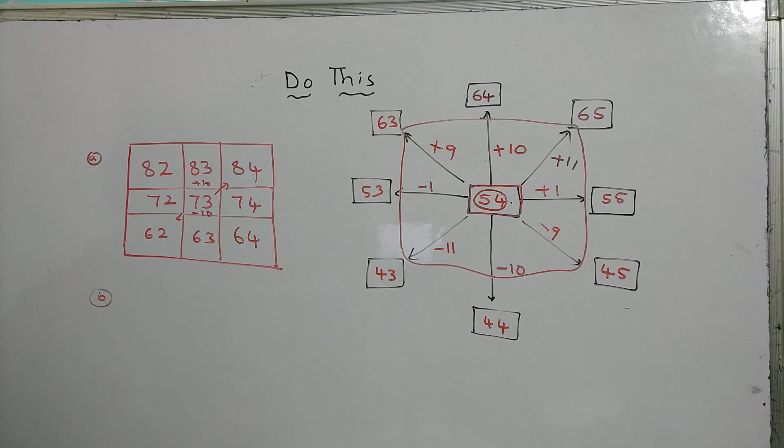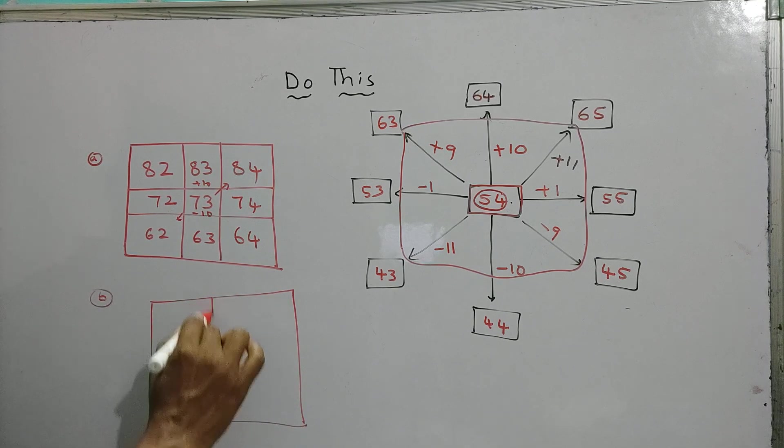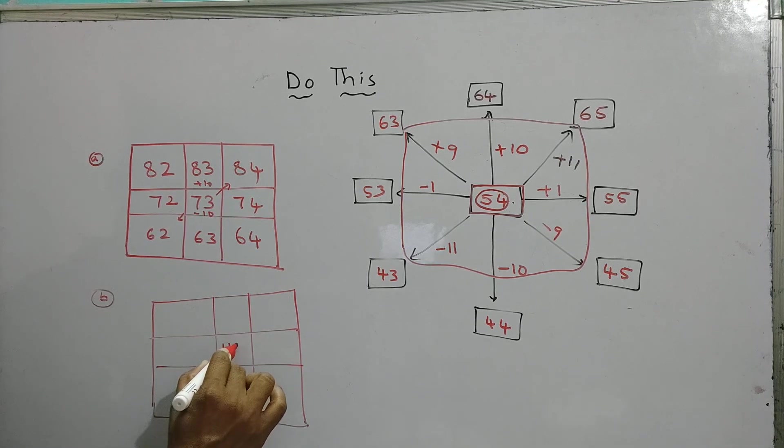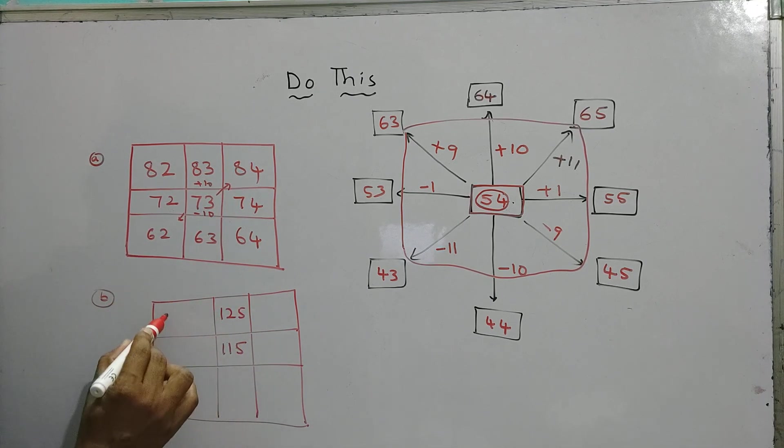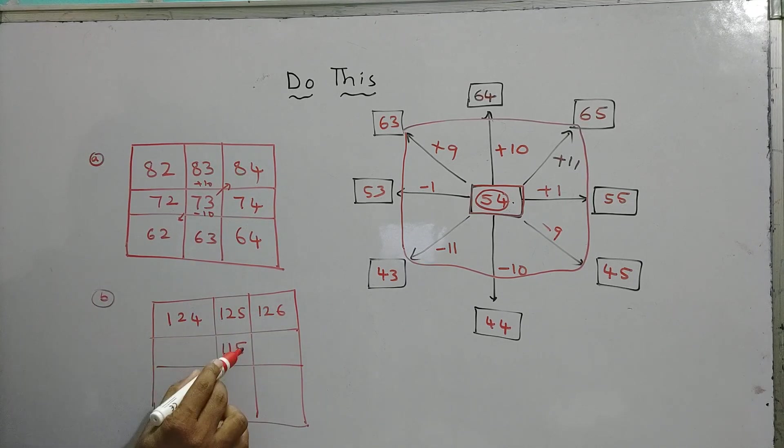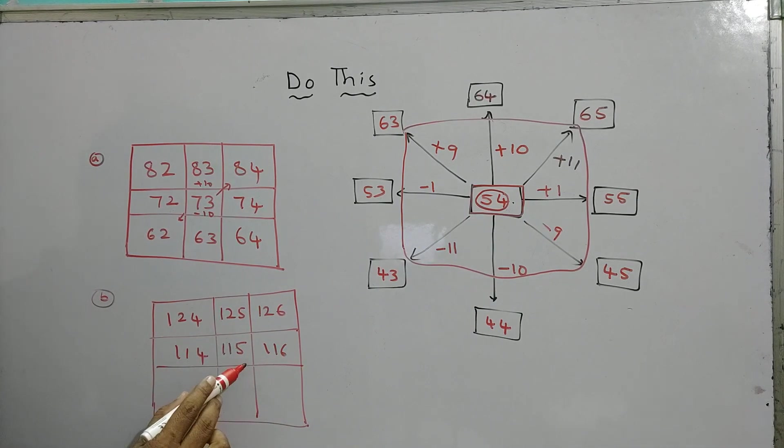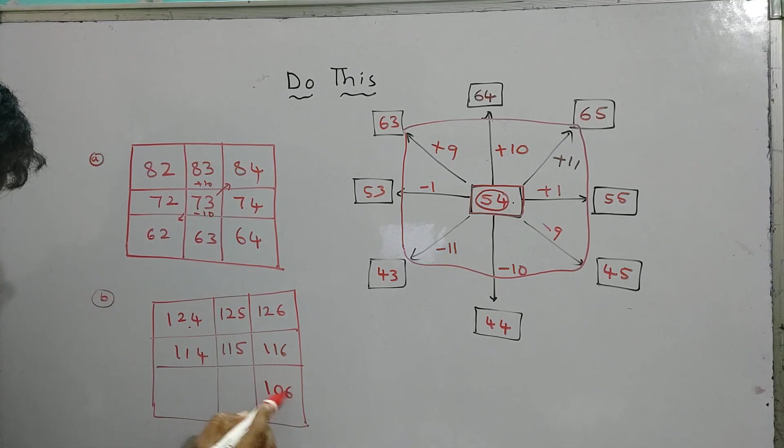I am going to fill one more box here. So what is there? 115. So here just add 10 here, 125 you will get. Add 9, 124. Add 11, 126. So here add plus 1, so it is plus 1 is 116. Minus 1 is 114. Minus, 106.